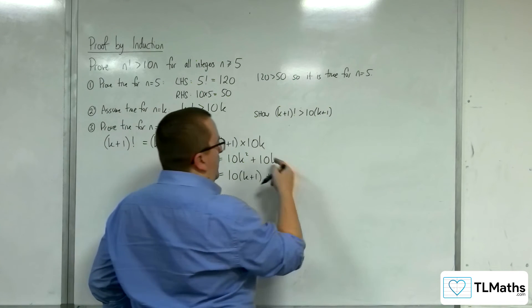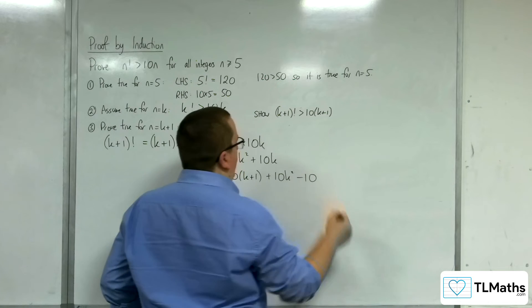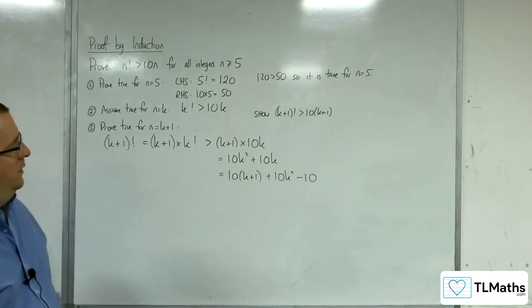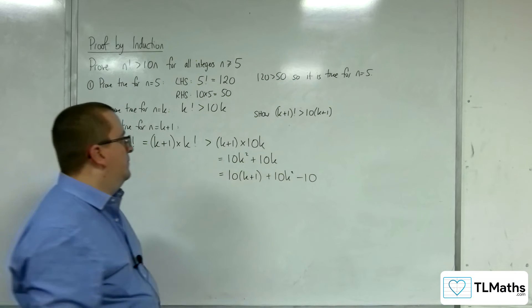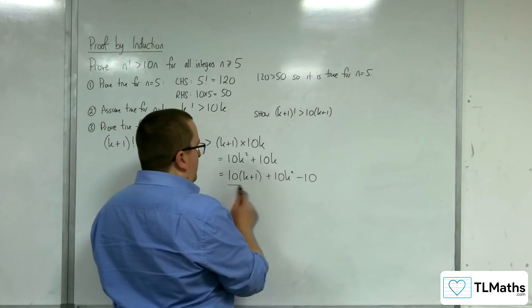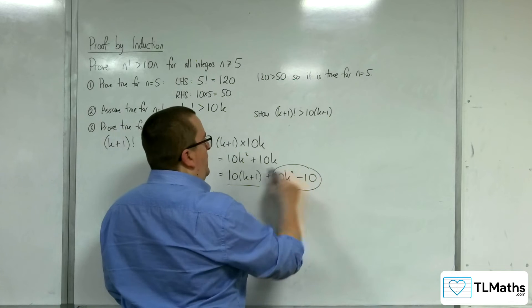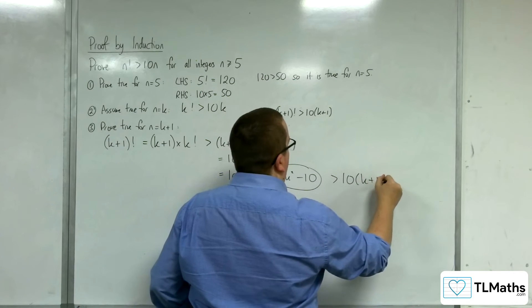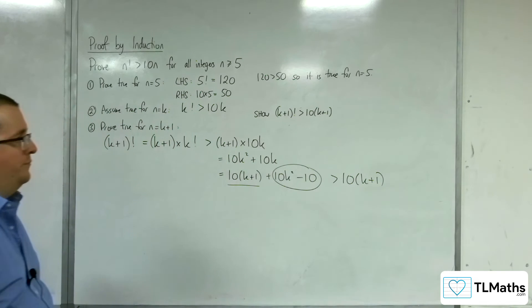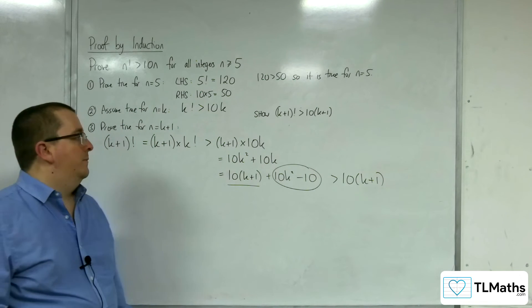This is giving me a 10 lots of 1, but I don't have a 10 there. So, I've got to take away 10. So, now, these two lines should be precisely the same. And, if this is greater than 0, then this is clearly greater than 10 lots of k plus 1. So, that's the plan to show that.